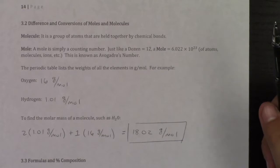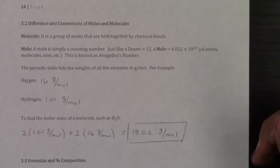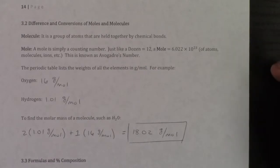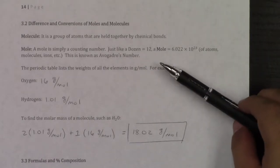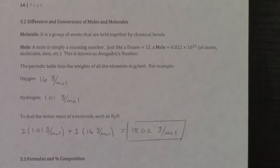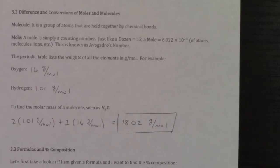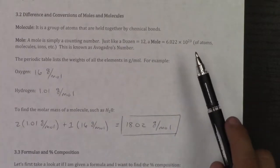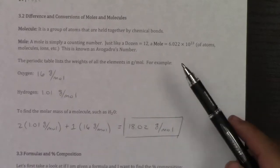If I asked you, can you give me a dozen eggs, you would go give me 12 eggs. If I said I need a dozen cars, you'd get me 12 cars. If I said give me a mole of eggs, you would be on the search for a long time because a mole is 6.022 times 10 to the 23. That's Avogadro's number.